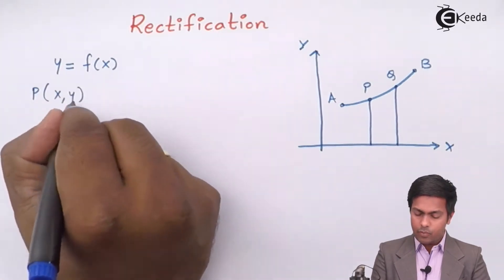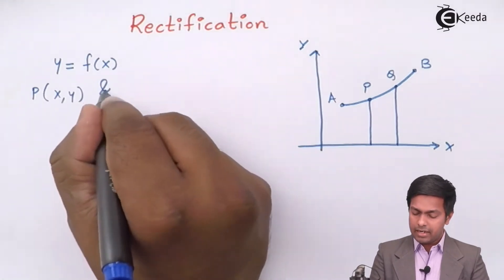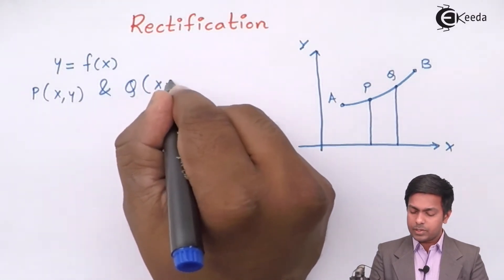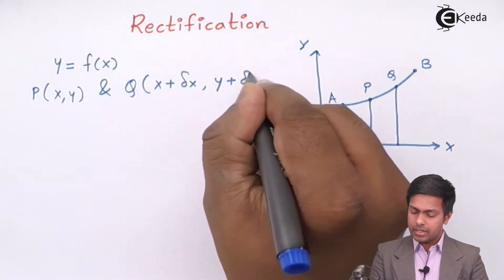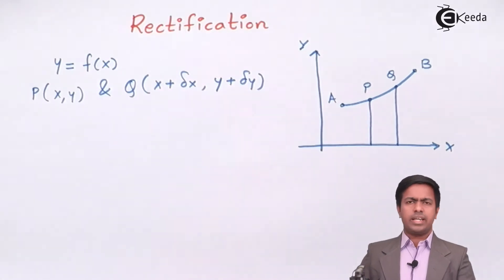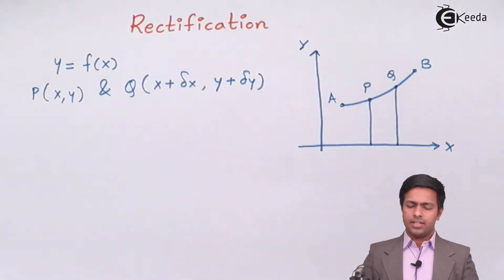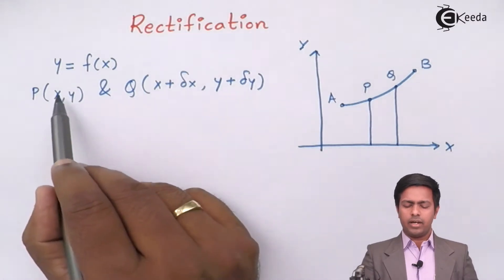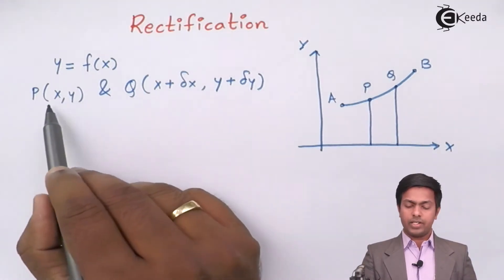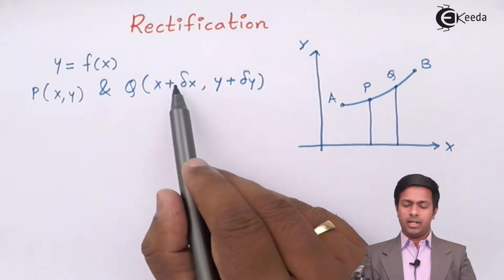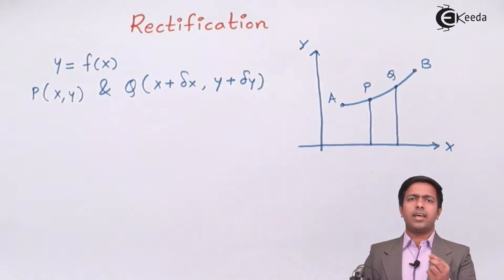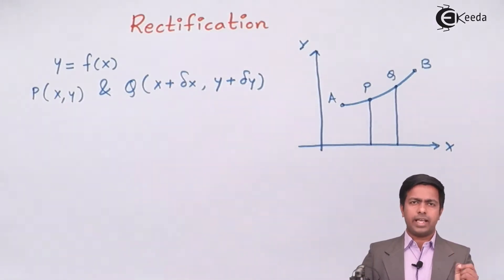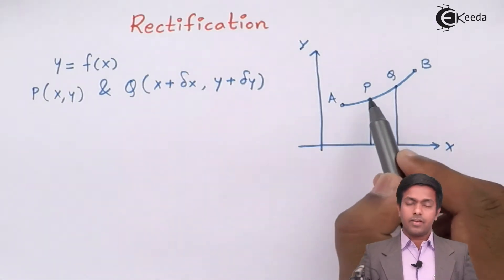The coordinates of P are (x, y) and the coordinates of Q are (x + Δx, y + Δy). Here Δx is the smallest part of x — so if x and y are 1 and 2, then Q would be at approximately 1.01 and 2.01. So Δx and Δy are the smallest increments of x and y.